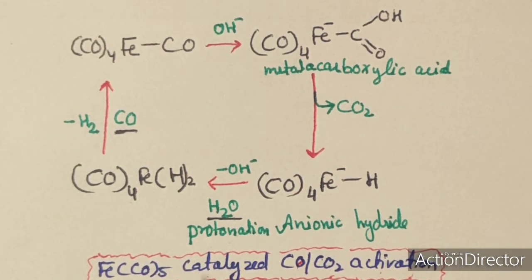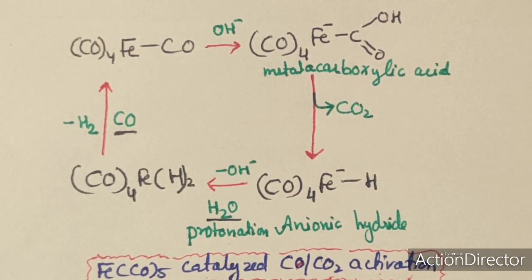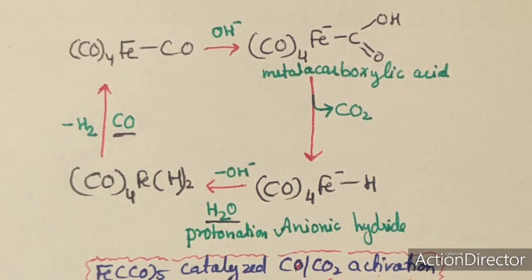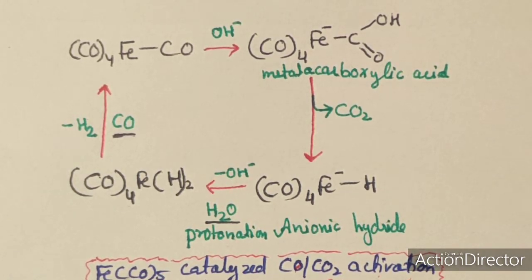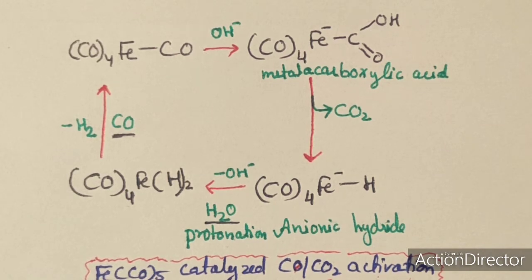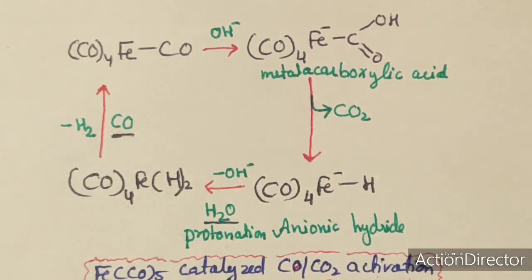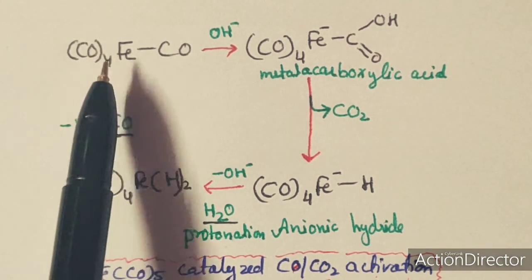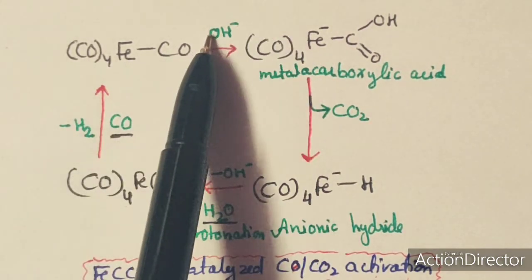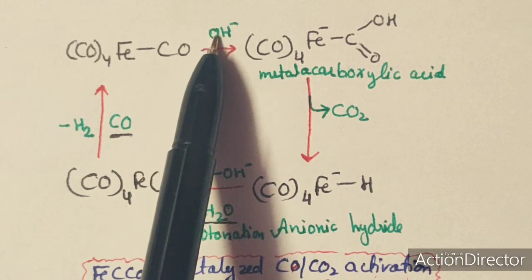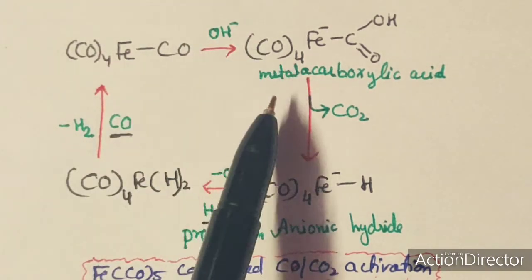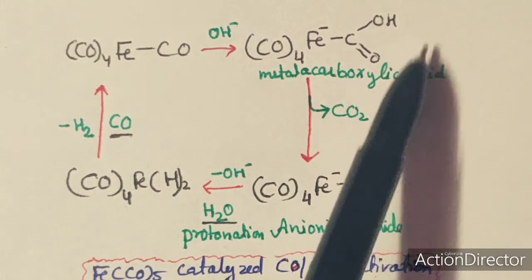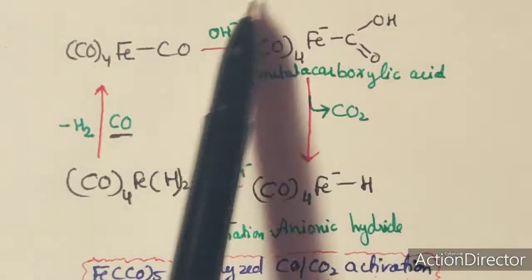There are two kinds of homogeneous catalysts for water gas shift: Fe(CO)5, an iron-based catalyst, and platinum-based catalyst. In the cycle for the iron-based catalyst, Fe(CO)5 is the catalyst. In the presence of base, this catalyst converts into metacarboxylic acid.